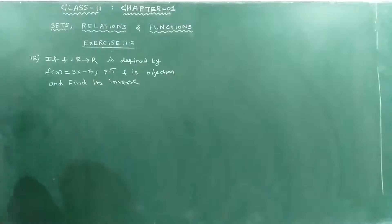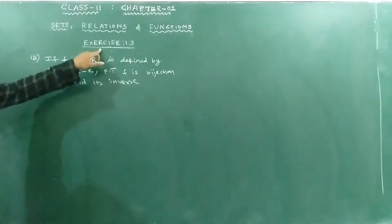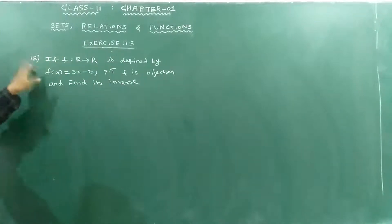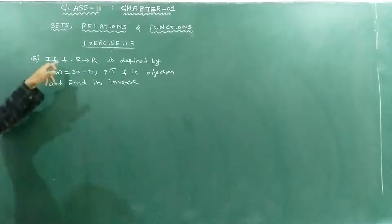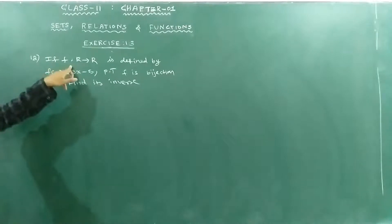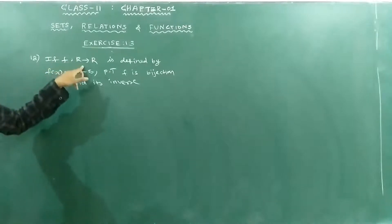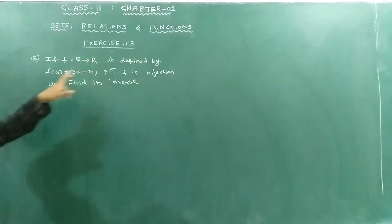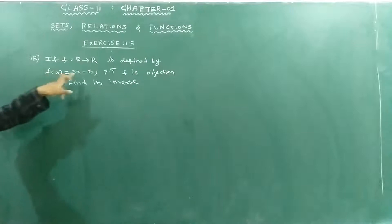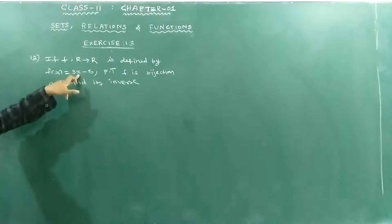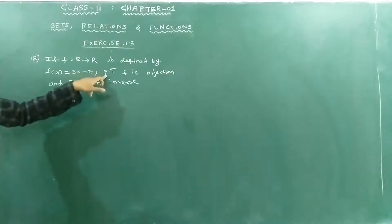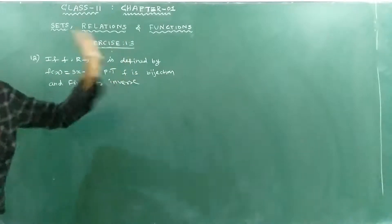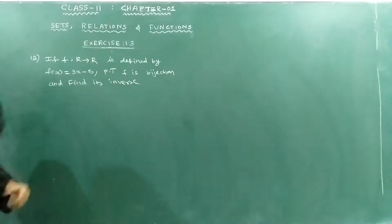Hello students. Exercise 1.3 question: if f, such that real number goes to real number, is defined by f of x equal to 3x minus 5, prove that f is a bijection.